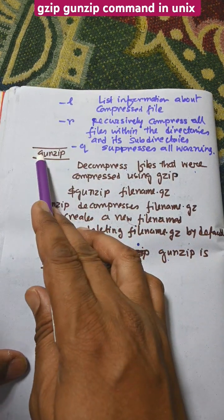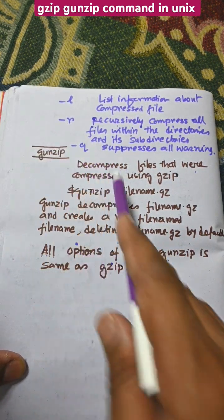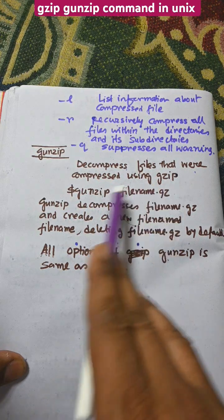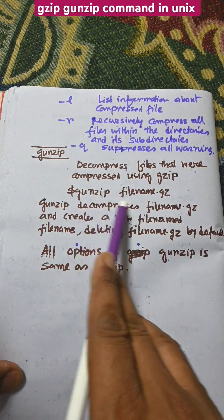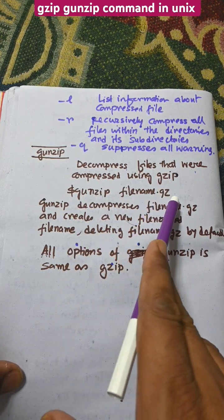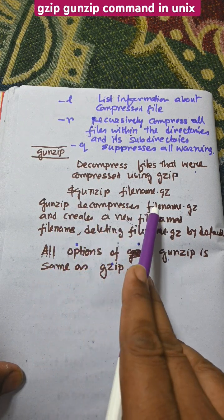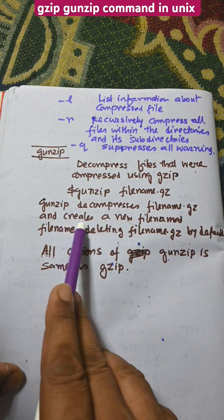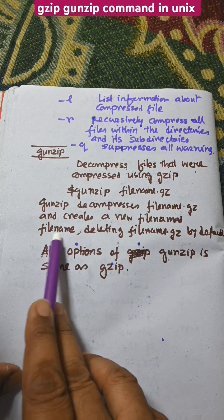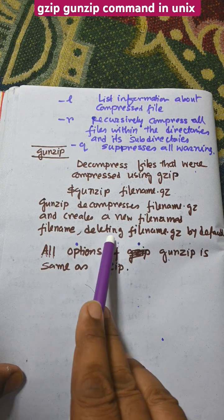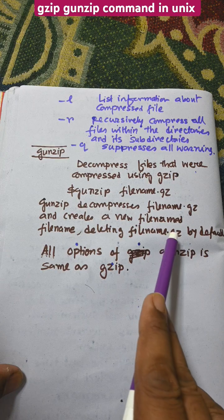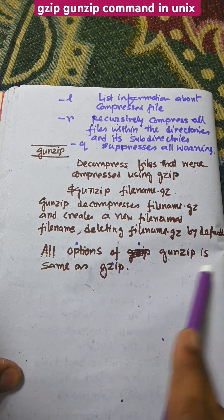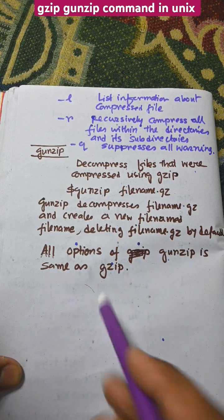The gunzip command decompresses files that were compressed using gzip: `gunzip filename.gz`. It will decompress filename.gz and create a new file called filename, deleting the filename.gz by default. All options of gunzip are the same as gzip.